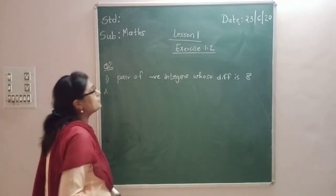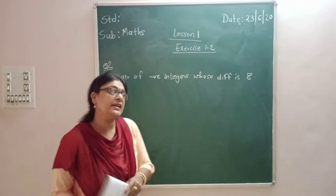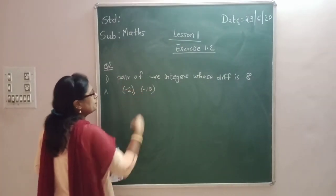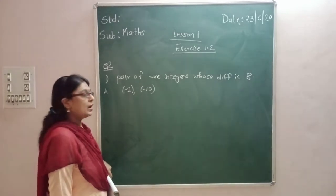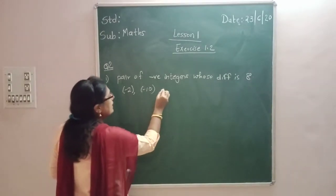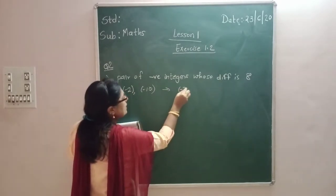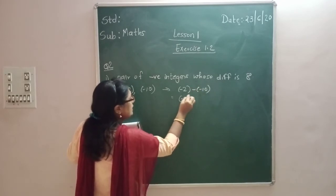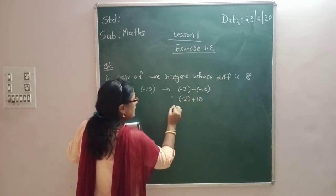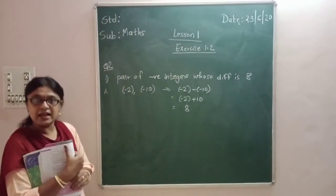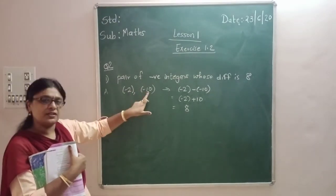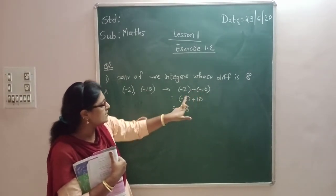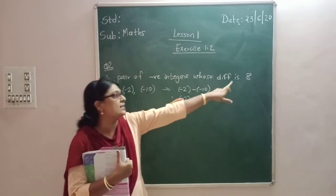So whose difference is 8 — I can select minus 2 and minus 10. So the difference is minus 2 minus (minus 10), that is equal to minus 2 plus 10, which equals 8. So two negative integers and their difference gives the answer 8.